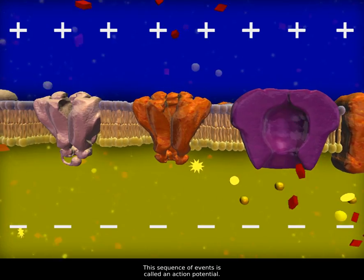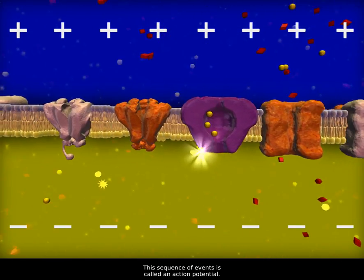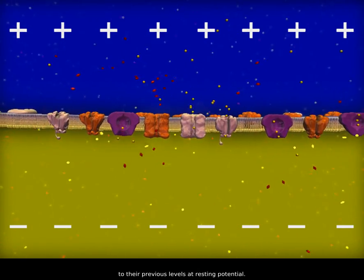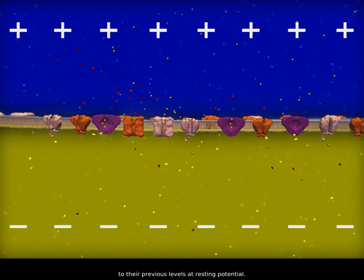This sequence of events is called an action potential. The sodium-potassium pump restores the distribution of ions back to their previous levels at resting potential.